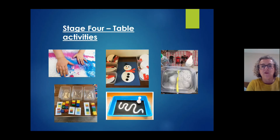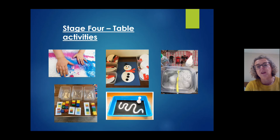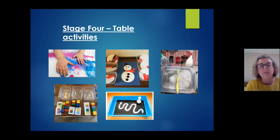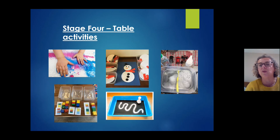Here are some ideas for stage four activities: modelling how to make a snowman picture that children then replicate, following a Lego pattern, making patterns with salt in a tray, bubble print pictures with bubble wrap, or a practical skill like washing toy cars with a toothbrush — once all washed, you put them back. Activities need to have a clear beginning and end.